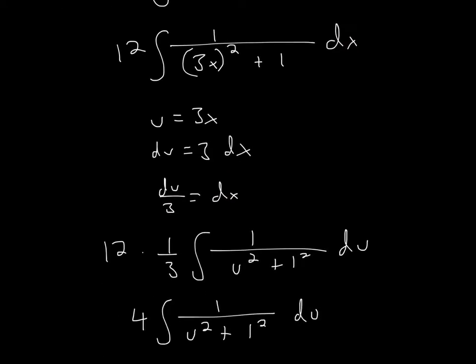So dx equals du over 3. Now we can start replacing. du over 3 is the same as one-third times du, so I have one-third here. I keep the 12 and the du. One-third du represents the dx. u represents 3x, so it's u². 1 squared is just 1, and I kept the 12.